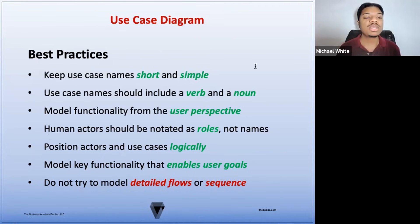Also, only model key functionality that enables user goals. Not all features or requirements will need to be illustrated in the use case diagram. Only those that have clear goals or relationships with those use cases. And finally, do not try to model detailed flows or a sequence. This type of detail is better suited for flow diagrams or sequence diagrams.